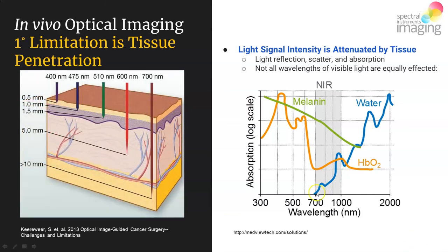What does this mean for the optical imager? The wavelength of light you use will strongly affect the sensitivity of your ability to detect your probe. If you select a probe that requires blue light, you will not detect any probe more than about half a millimeter from the surface. If you use a probe requiring green excitation light, you can have the probe slightly deeper — but still not much, basically one and a half millimeters. Using a probe excited by red light, you can go down to five millimeters.